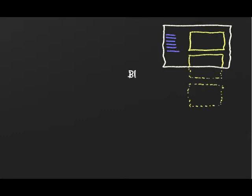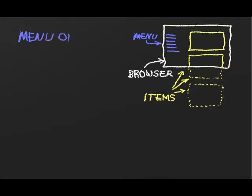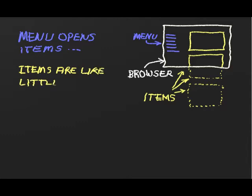And now let's start our guided tour with a quick map of how things are laid out. Content is organized in a series of sub-windows called items. A menu along the left edge has links to open the items. Items are like little windows, and as we'll see, you can navigate between them.